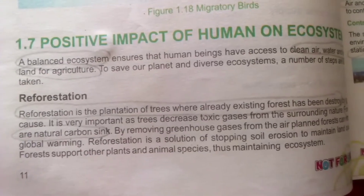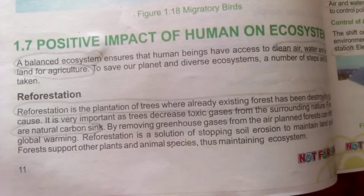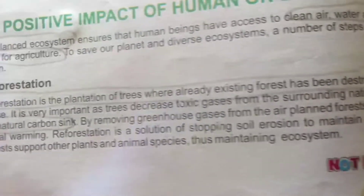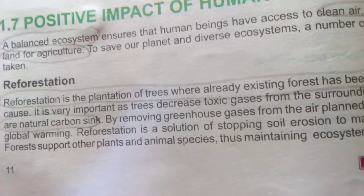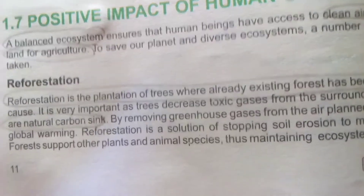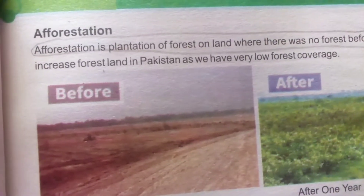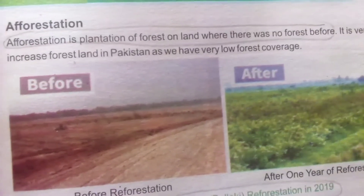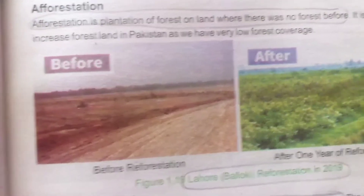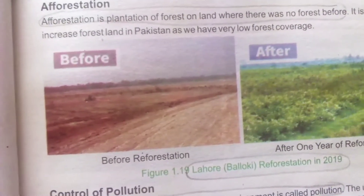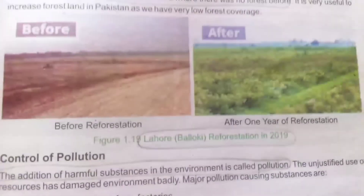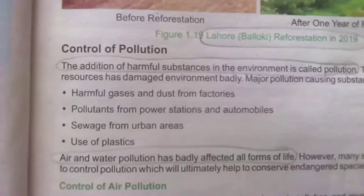Reforestation is the plantation of trees where an already existing forest has been destroyed by some cause — it means rebuilding a forest. Forests are natural carbon sinks — they absorb carbon. Afforestation is where there was no forest before, and a new forest is created there. Where a jungle already existed but was destroyed, rebuilding it is called reforestation — as done in Lahore's reforestation project in 2019.